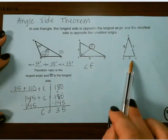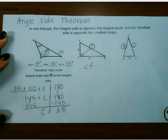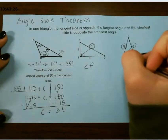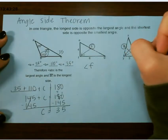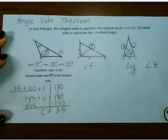And for our last one, on this one, our largest sides are both 8, which would make angle Y and angle Z both our largest angles.